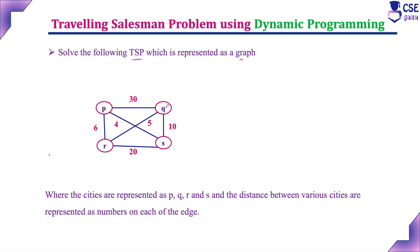P to Q as well as Q to P, the distance is 30 — both directions have the same cost in this example. Similarly, Q to S and S to Q is 10. R to S and S to R is 20. Likewise, we need to consider all such edge weights.